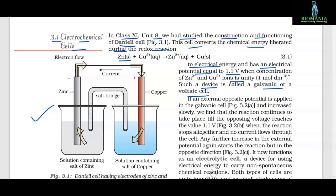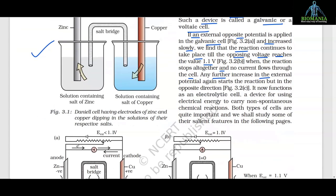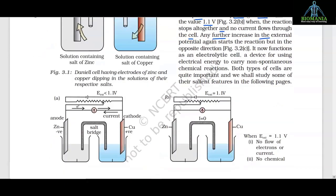The reaction is Zn + Cu²⁺ gives out Zn²⁺ + Cu. If an external opposite potential is applied in the galvanic cell and increased slowly, the reaction continues to take place till the opposing voltage reaches 1.1 volt, when the reaction stops and no current flows. Any further increase in external potential starts the reaction in the opposite direction — it now functions as an electrolytic cell, a device for using electrical energy to carry out non-spontaneous chemical reactions. Both types of cells are quite important and we shall study their salient features in the following pages.